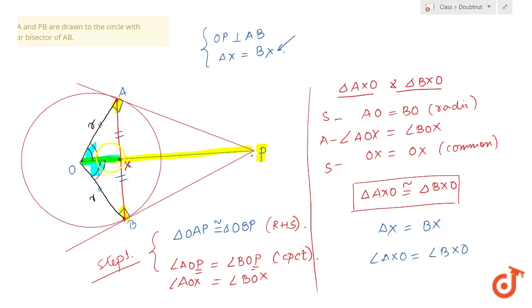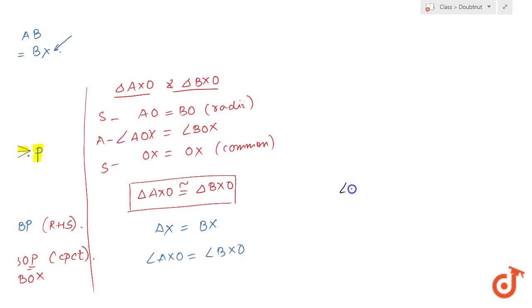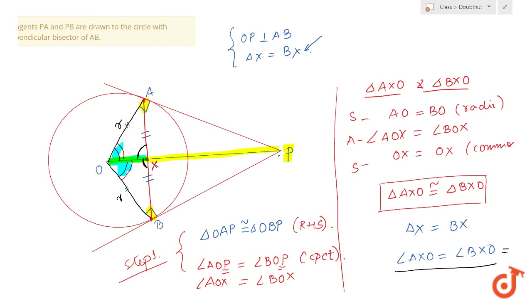This means that this angle and this angle should be equal. But they form a linear pair also. This means that angle AXO plus angle BXO, since AB is a straight line, must be equal to 180 degrees. It means that both of them are equal to 90 degrees. This means that these four angles are 90.